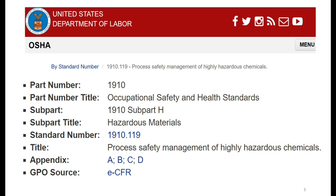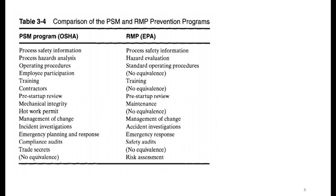In industrial health, chemicals also play an important role. Process safety management (PSM) of highly hazardous chemicals is covered under OSHA standard 29 CFR 1910.119. There is also an ergonomics risk assessment component. Comparing PSM and RMP — PSM is process safety management promulgated by OSHA, and RMP is risk management practice given by the Environmental Protection Agency.